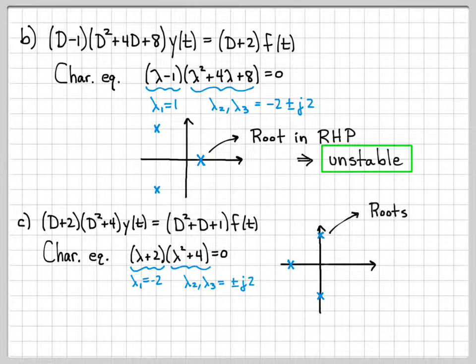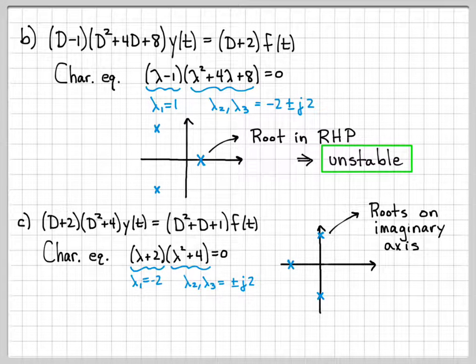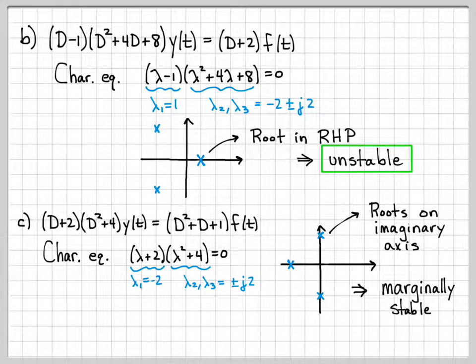So this is interesting. We now have roots on the imaginary axis. Any time we have roots on the imaginary axis, this corresponds to a system that is marginally stable. So since the roots are on the axis, this is a marginally stable system.